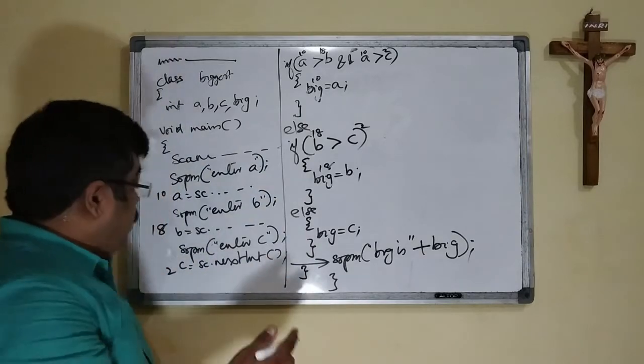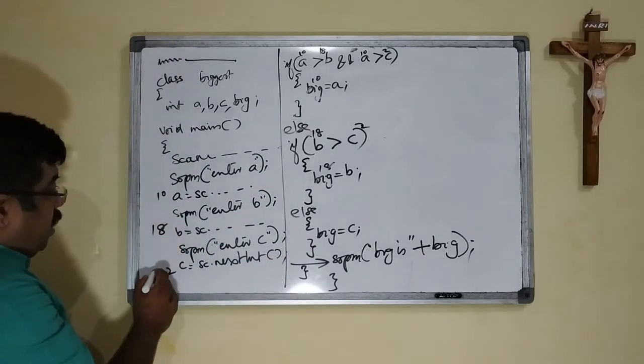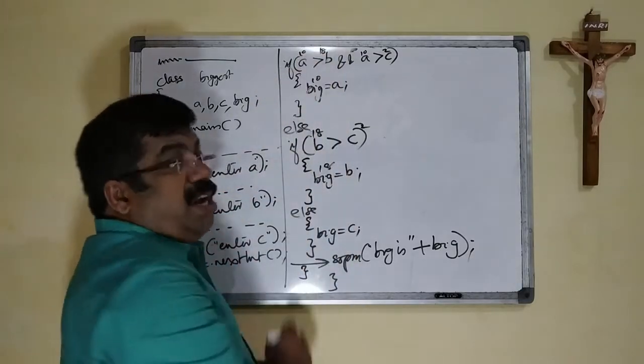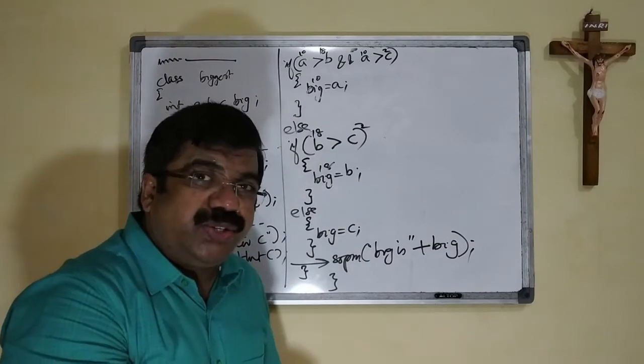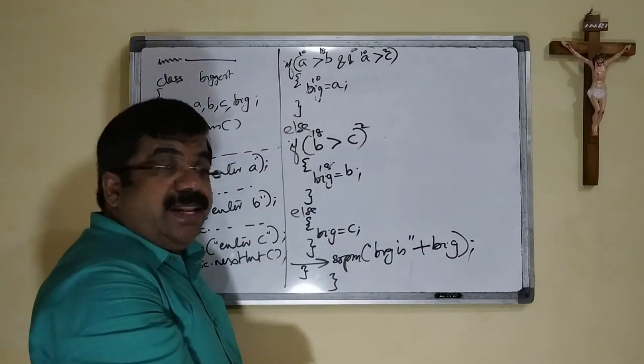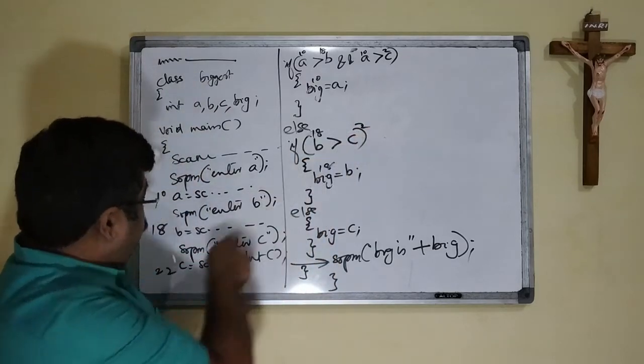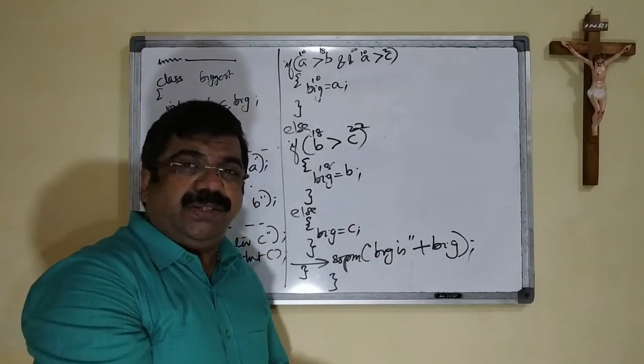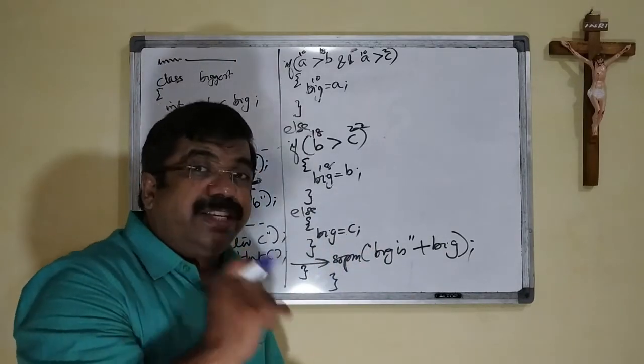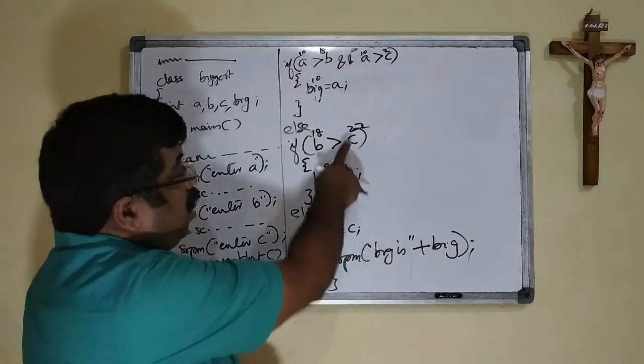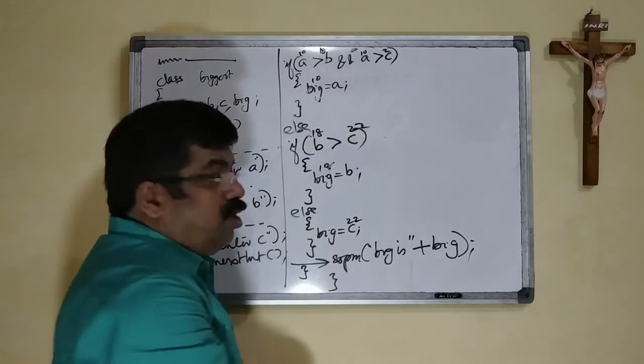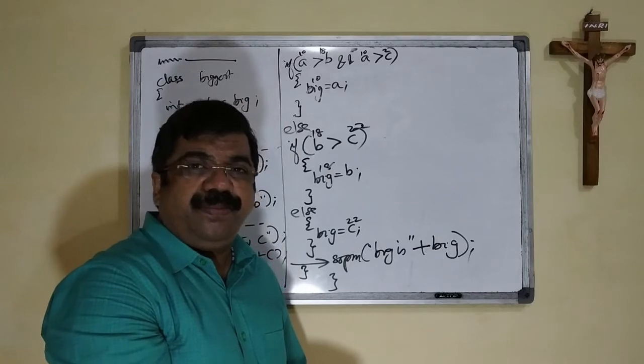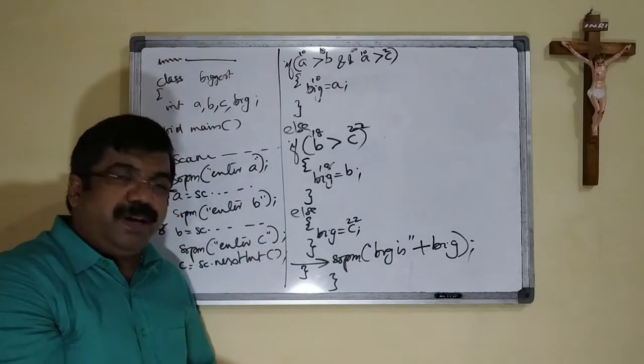Take another example: 10, 18, and 20. 10 greater than 18 condition is false. Coming to the second line, the 18 is greater than the C. C is 22. That is also false. So what is the possibility? C is the biggest. What was the 22? 22 goes to the big. Printing it. Finishing, I hope it is very good.